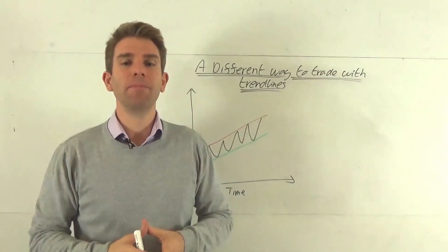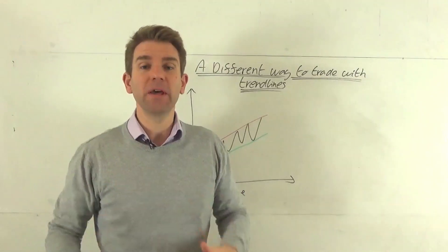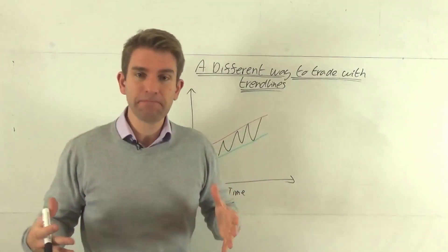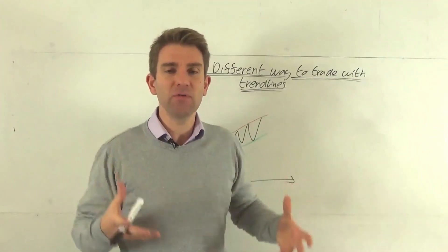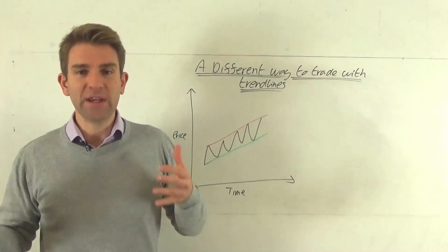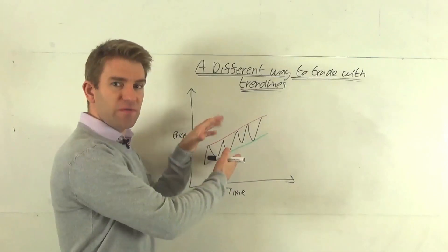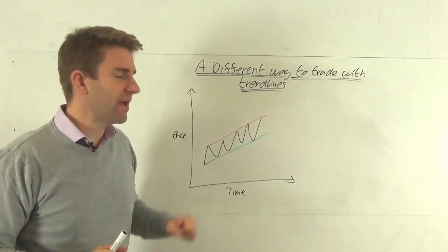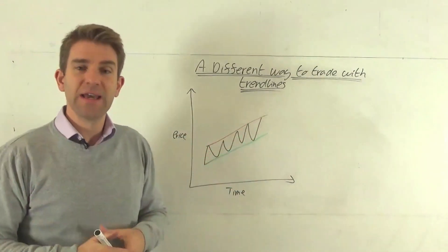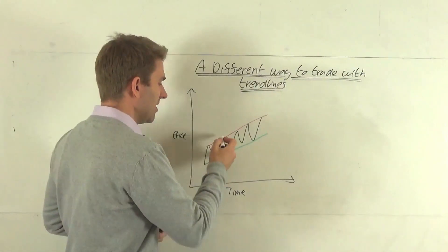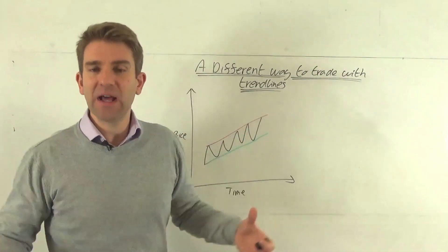Because if you align yourself with the trend, then at least you're giving yourself the best possible chance of making a winning trade. The trouble with trend lines is that this all looks very nice when we put it on the board here. We get a whiteboard up, we look at textbooks and they say yep, we buy here, we buy here, we sell here, we sell here, and that looks very nice in theory.